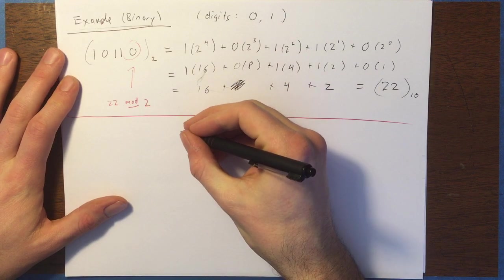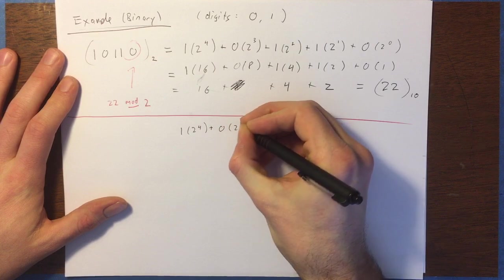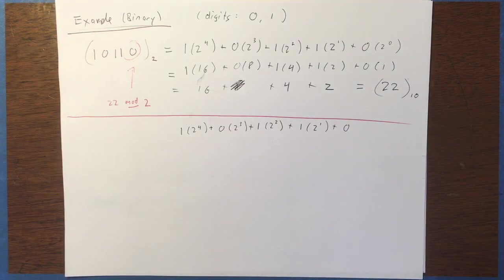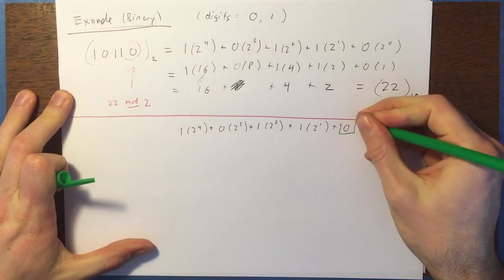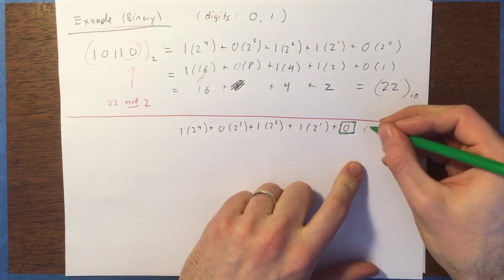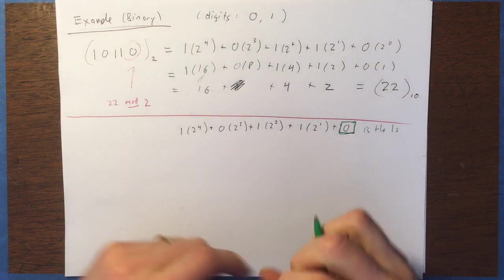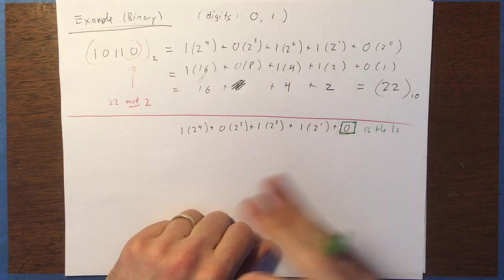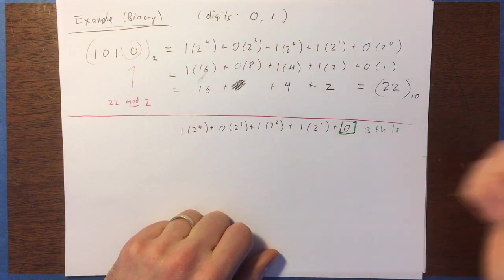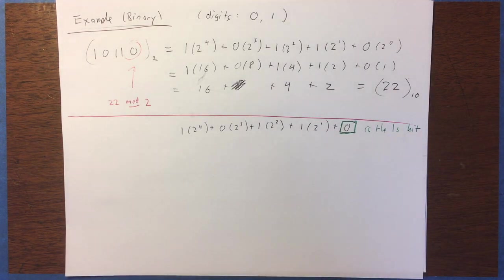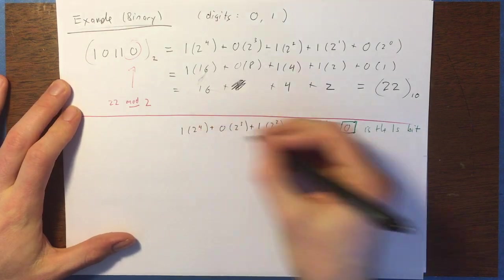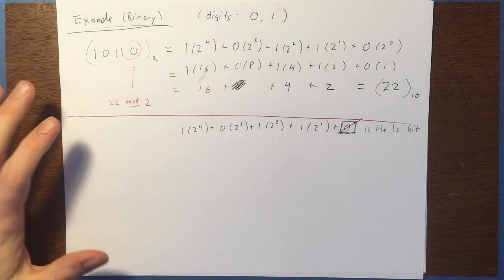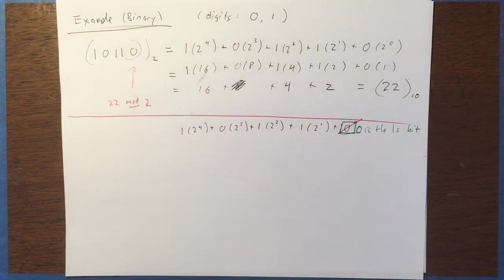So I'm first going to write this out as 1 times 2 to the power of 4, plus 0 times 2 cubed, plus 1 times 2 squared, plus 1 times 2 to the 1, plus 0. On the first pass through, we take out the 0 — that is the 1's place. Now, when you're working in binary, sometimes you call the digits bits, because in a computer a bit is either a 1 or a 0 — a single digit of information. So I'm going to call this the 1's bit.